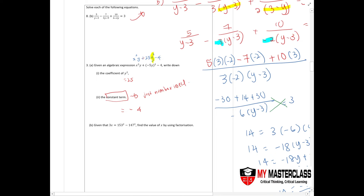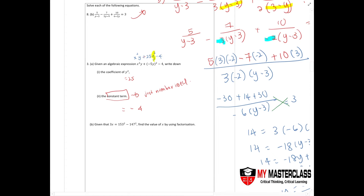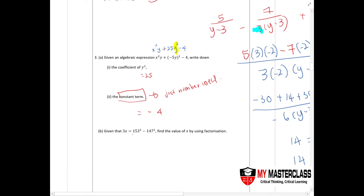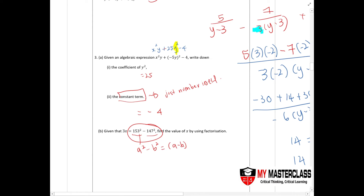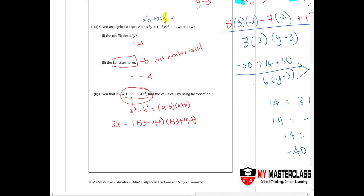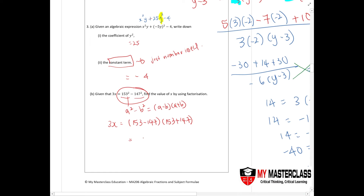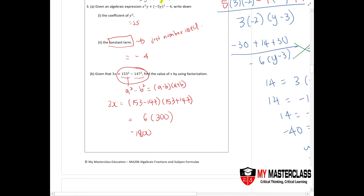Given that 3x equals 153 squared minus 147 squared, find the value of x using factorization. This uses the difference of squares: a squared minus b squared equals a minus b times a plus b. So write 153 minus 147 times 153 plus 147. Please show your working — don't just press it into a calculator. This gives 6 times 300, equalling 1800. So x equals 1800 divided by 3, which gives x equals 600.